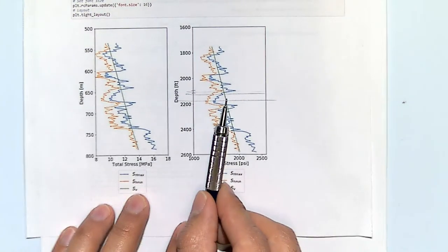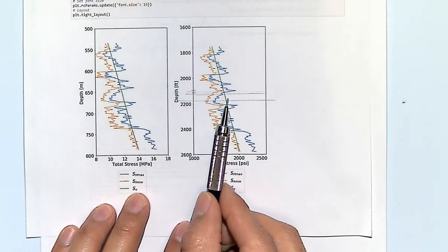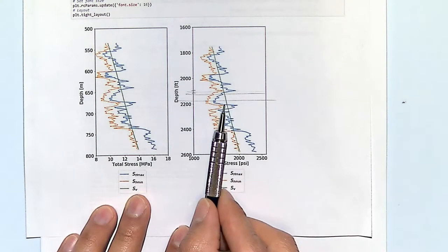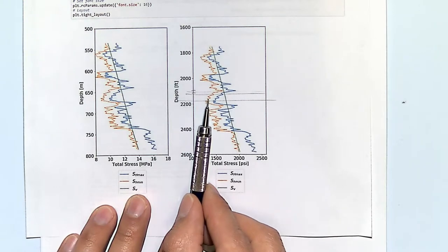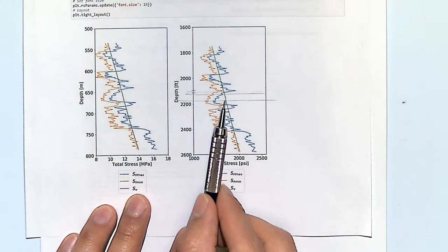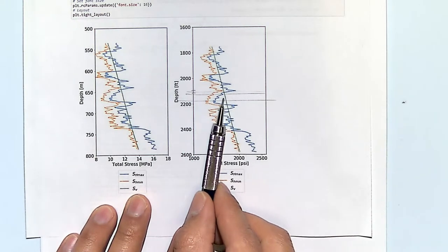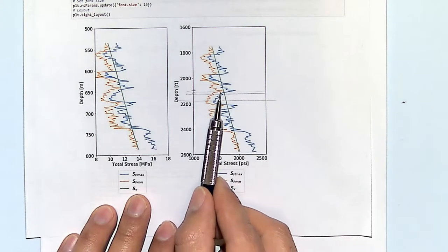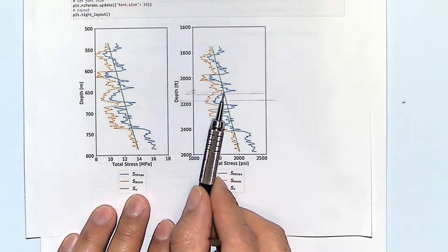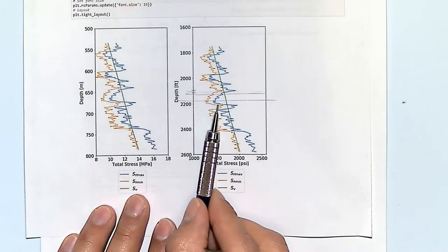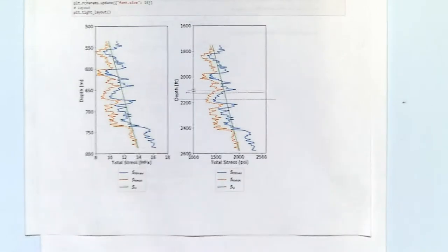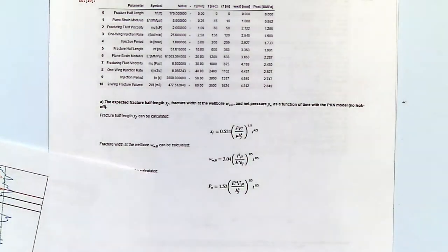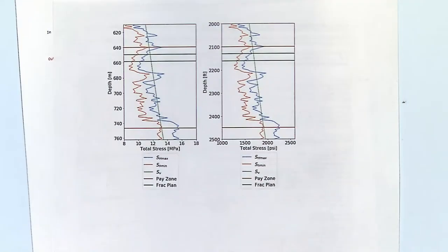If we put perforations here and initiate a hydraulic fracture, it will very likely start by filling up the region where the minimum principal stress is smaller than the vertical stress. Then you will find these bumps of high horizontal stress. Let me go to the answer — Jeffrey already prepared that.